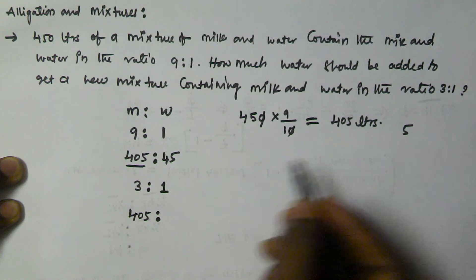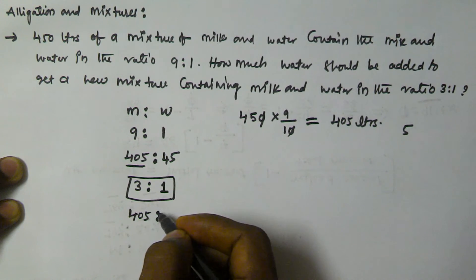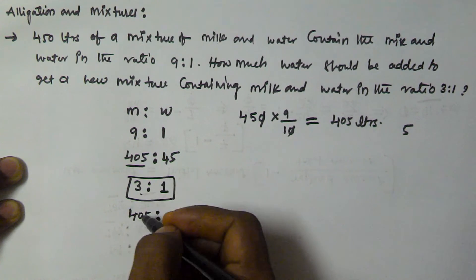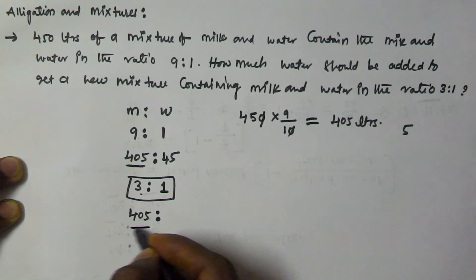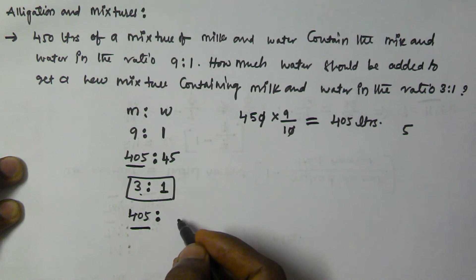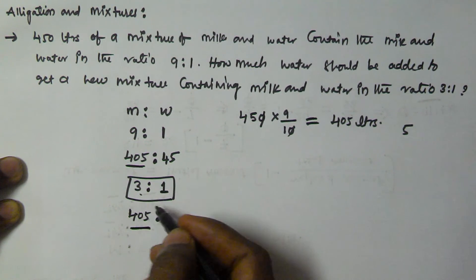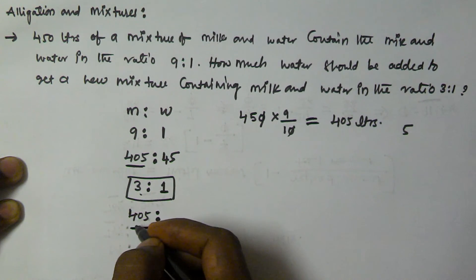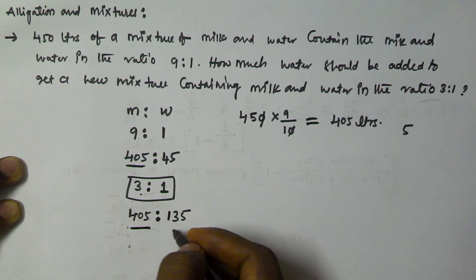The resultant ratio should be 3:1 — this is the milk and this is the water. Milk is 3 parts out of 4 total parts. Since 405 liters equals 3 parts, we divide 405 by 3 to get 1 part. That gives us 135 liters of water.